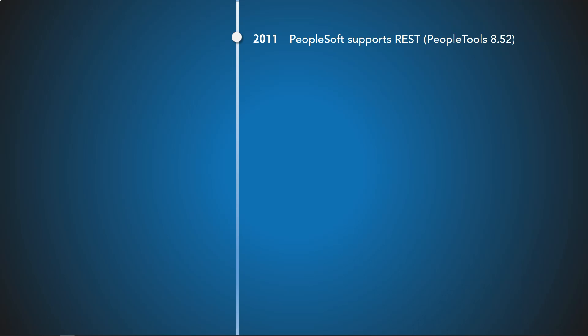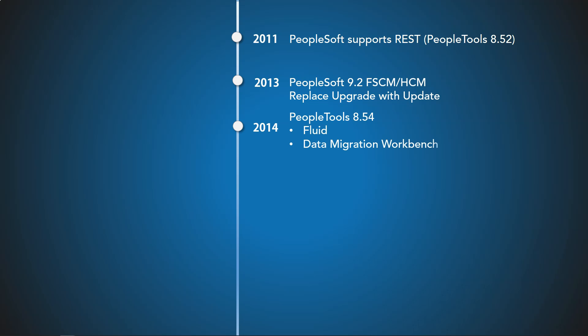In 2013, PeopleSoft released version 9.2 for both Finance and HCM. Oracle changed the delivery model after this release — customers no longer need to upgrade to gain access to new features. Instead, customers can pick and choose the features they want and apply them independently. In 2014, with PeopleTools 8.54, PeopleSoft provided a new set of tools for developers to create mobile-friendly pages called the Fluid Framework, allowing developers to create pages with modern look and feel leveraging CSS and JavaScript.